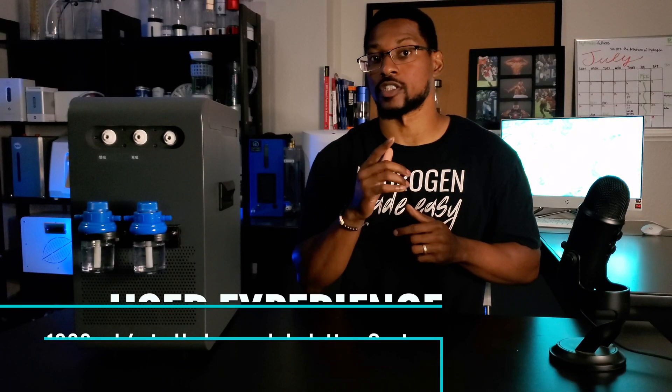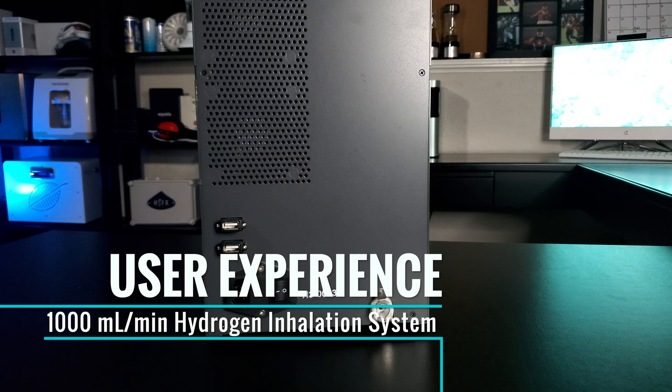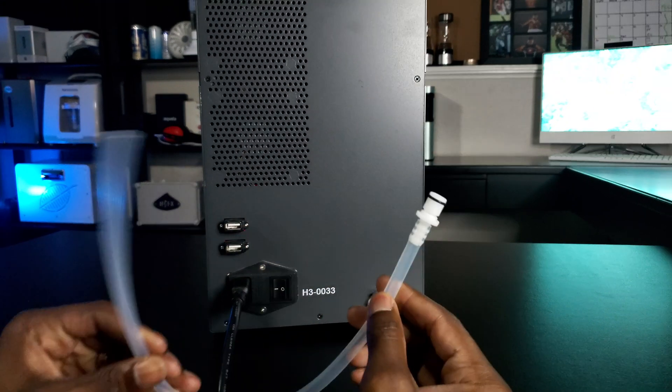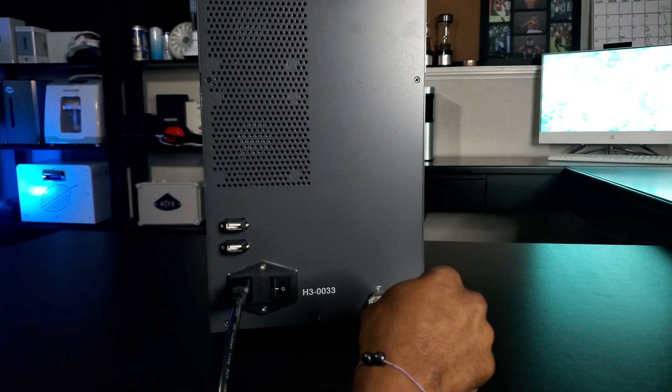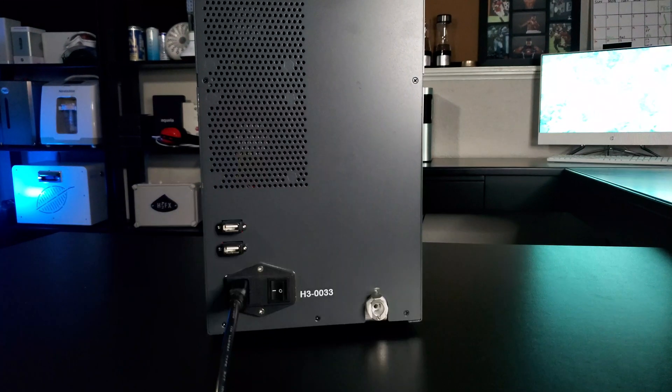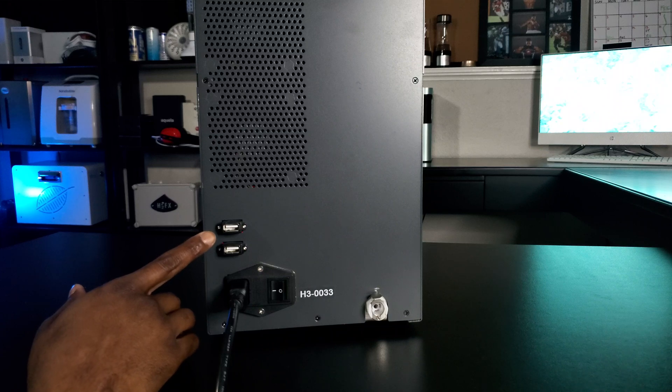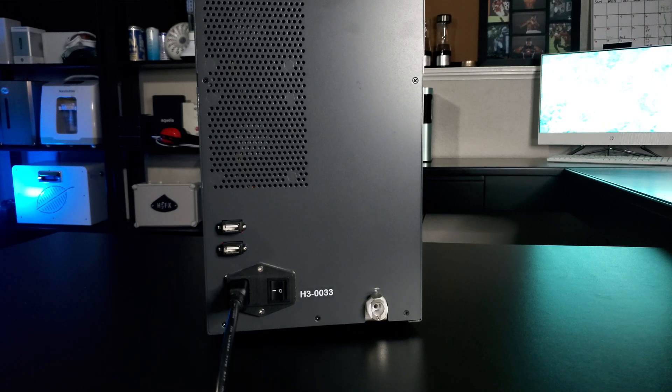Let's go ahead and cover the user experience of this system. On the back side of the system you will see the master switch and also the input for the power cord. Next to that you will find the outlet port to drain water from the system. You will also see two USB ports. These are for the manufacturer of the system to track the use of the device in case of any warranty related issues.